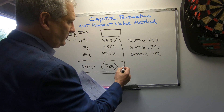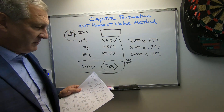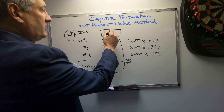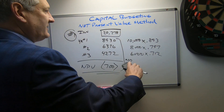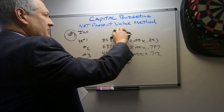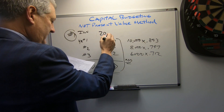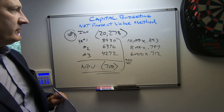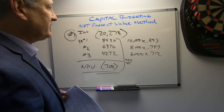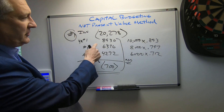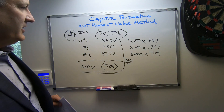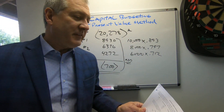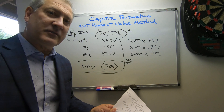Adding all the numbers together, we get a project cost — an outflow — of negative $20,278 as the initial investment. The inflows of $8,930, $6,376, and $4,272 combined with that outflow result in a negative $700 NPV. So the answer: the amount of the initial investment is $20,278.